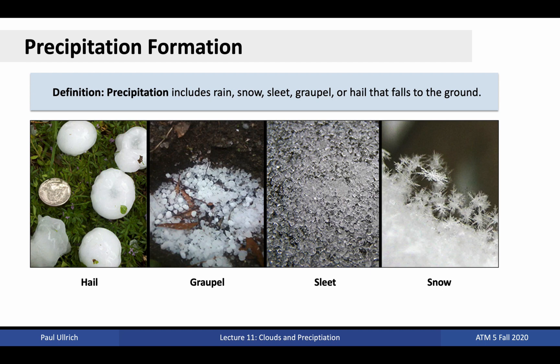When cloud droplets grow into rain droplets, snow, or ice, they can precipitate out and fall to the ground. Many different kinds of precipitation are possible depending on the local temperature structure, moisture content, and strength of the vertical motion. Here we see a picture of several kinds of precipitation, including hail, graupel, sleet, and snow.